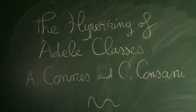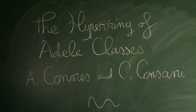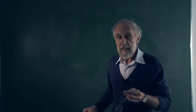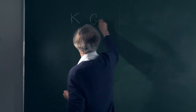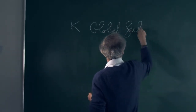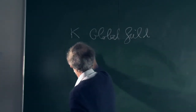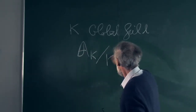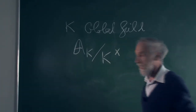This is a joint paper with Katerina Consani, and the title of the paper is The Hyperring of Adele Classes. The Adele class space, given a global field k, is simply the quotient of the Adeles over k by the multiplicative group of k.